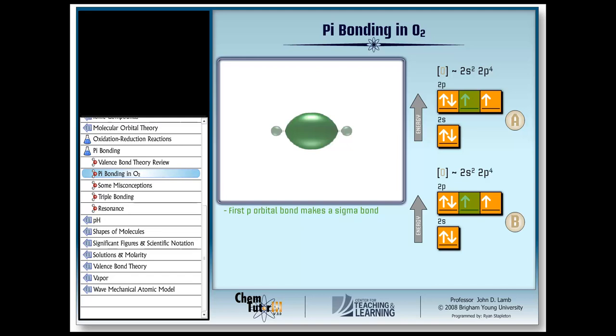Why? Because the electron density in the bond is symmetrical around the bond axis. Okay, now let's form the second bond in the double bond. Here are the remaining unfilled p orbitals on the two oxygen atoms.